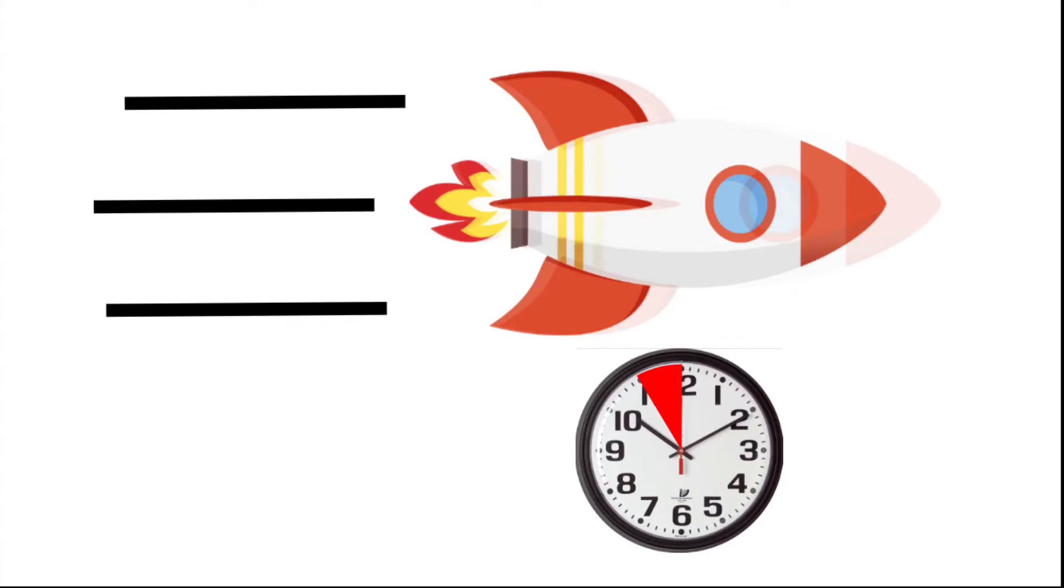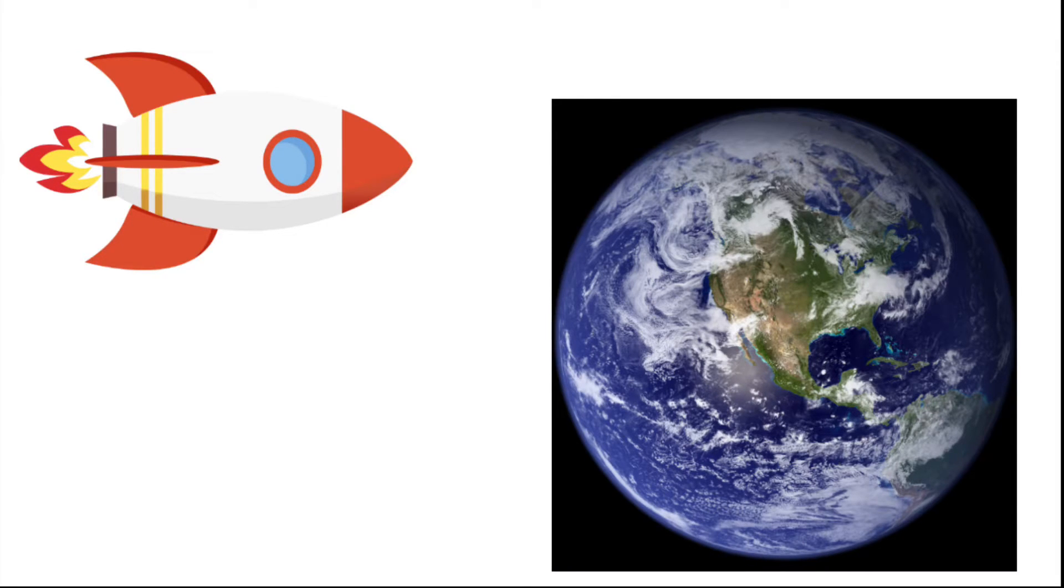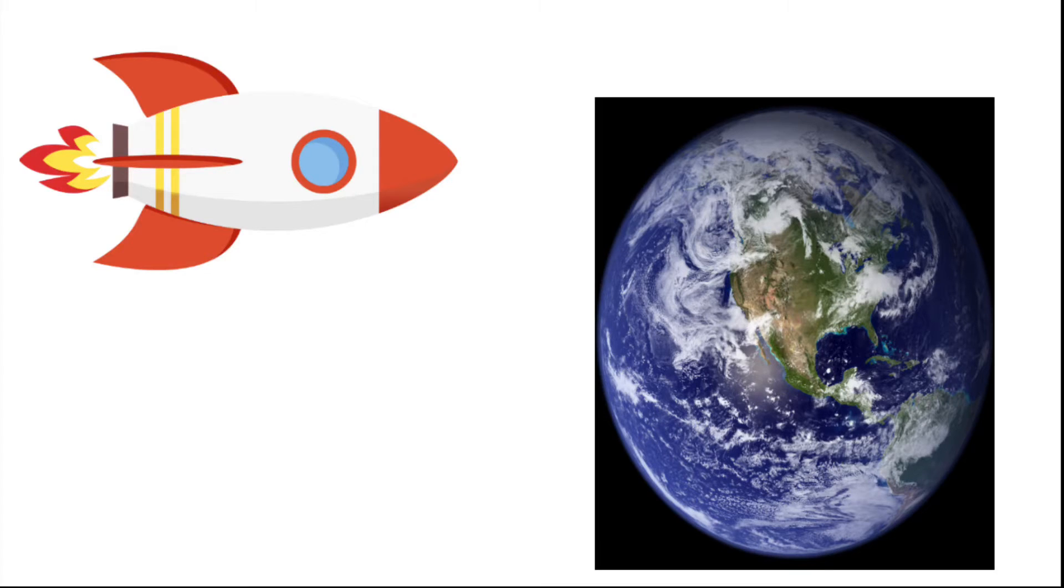When the length of the ship is contracted, the person in it sees that the whole world is contracted because from his perspective, the world is moving at half the speed of light and not him. Basically, relativity can be weird.